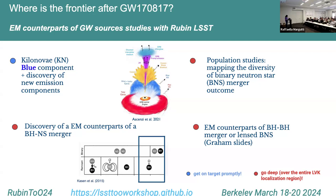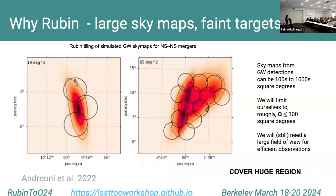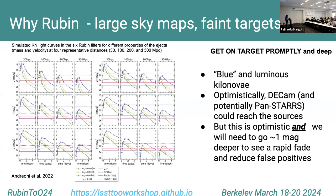This shows Rubin tiling of simulated gravitational wave sky maps for neutron star mergers with 20 and 85 square degrees. This means we still need a large field of view for efficient observation to detect the gravitational wave counterpart. These are simulated kilonova light curves from Andreoni et al. 2022 in the six Rubin filters at different distances and different kilonova properties. This is for the blue and luminous kilonova.